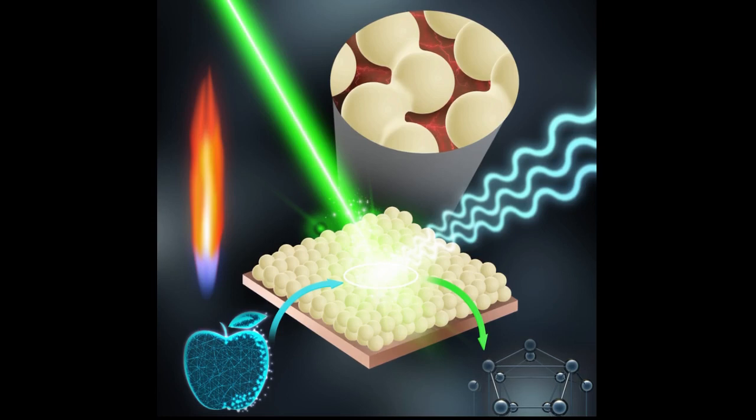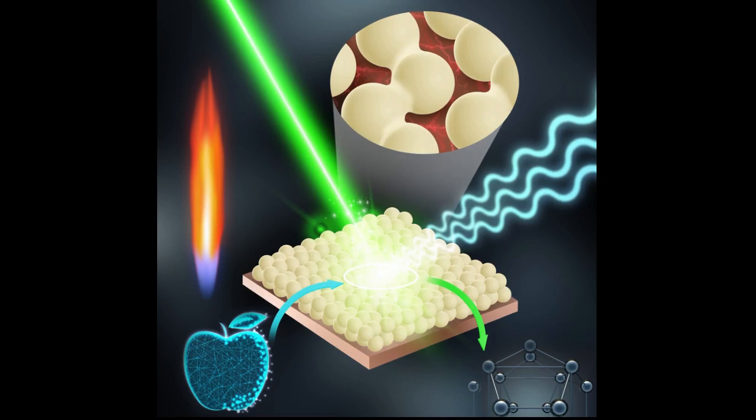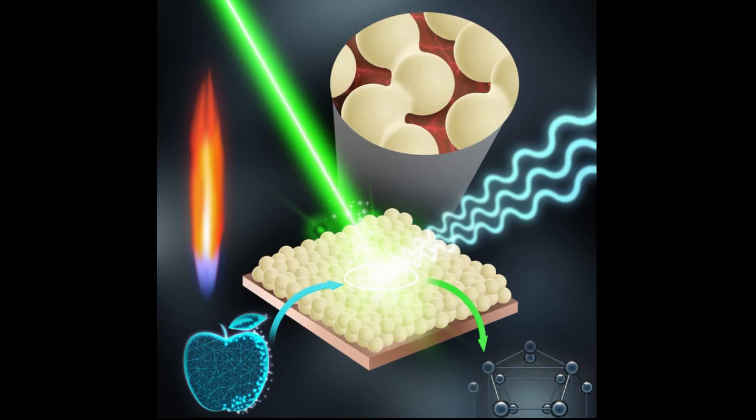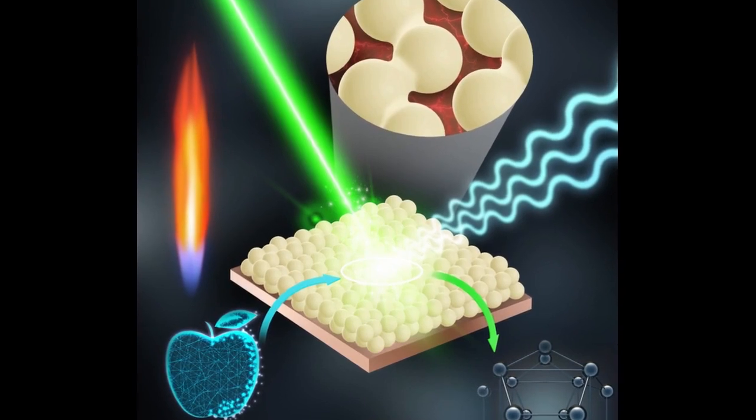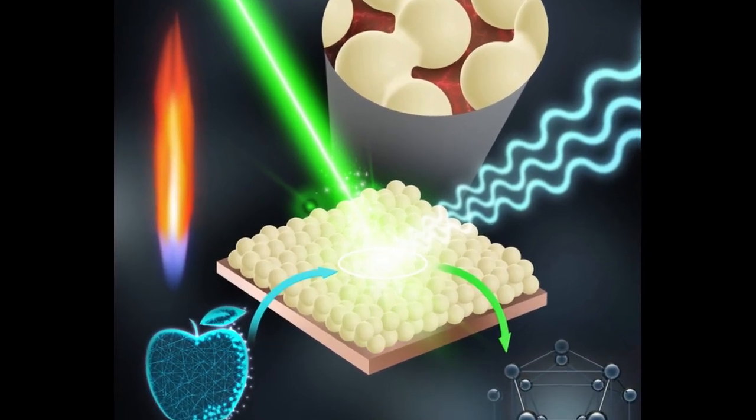The new nanosensors employ a 1970s discovery known as Surface Enhanced Raman Scattering, or SERS, a powerful sensing technique that can increase the diagnostic signals of biomolecules on metal surfaces by more than one million times.